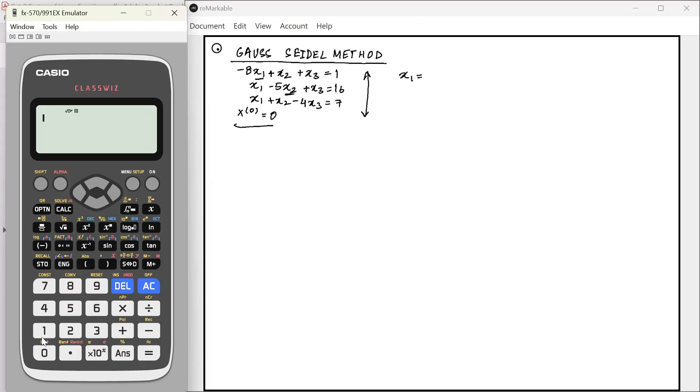What we get is x1 equals minus 1 by 8 times 1 minus x2 minus x3, x2 equals minus 1 by 5 times 16 minus x1 minus x3, x3 equals minus 1 by 4 times 7 minus x1 minus x2.